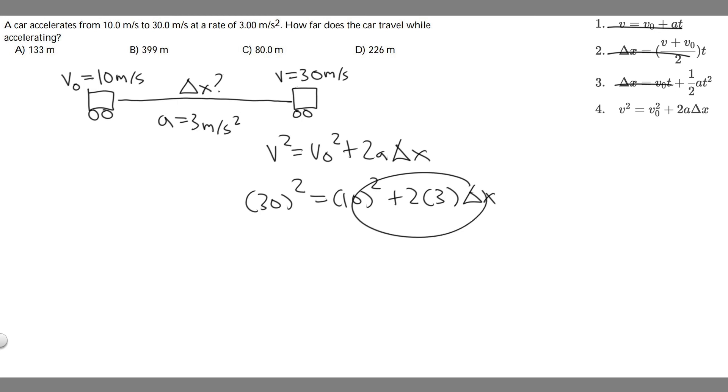So all we've got to do is go ahead and solve. We can minus 10 squared from both sides. If you go ahead and do 30 squared, and then you minus 10 squared, you're going to get 800. So 800, this cancels, is equal to 2 times 3 is 6, times delta x, and then you can divide by 6. So 800 divided by 6, that's going to give you delta x.